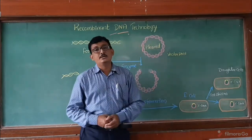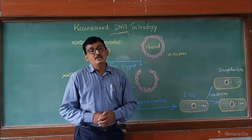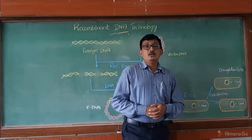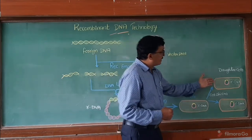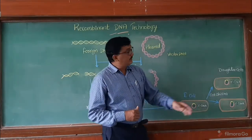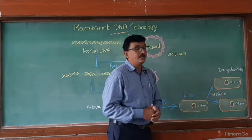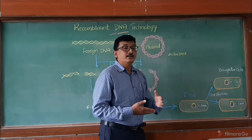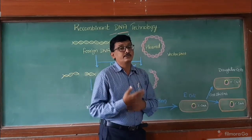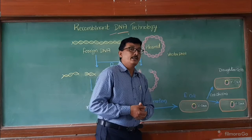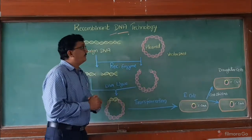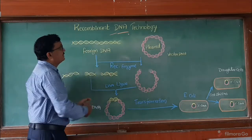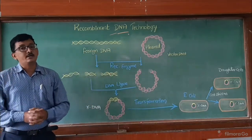For example, taking Escherichia coli — transformed Escherichia coli. Whenever this transformed Escherichia coli undergoes cell division, that is binary fission, whenever daughter cells are formed, we can see in these daughter cells also that the rDNA is present. Whenever this bacteria further undergoes cell divisions, the rDNA is also able to replicate. These are the different steps involved in recombinant DNA technology.